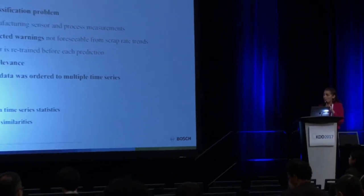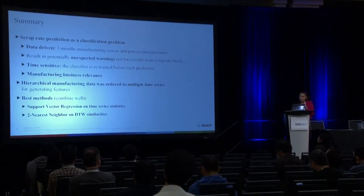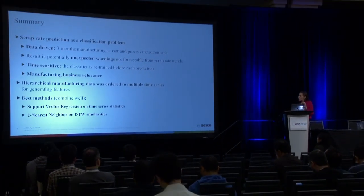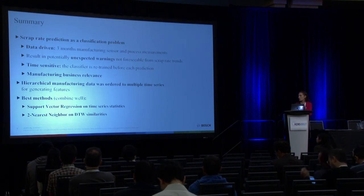In summary, we defined the scrap rate prediction system as a classification task. The method is data-driven, using three months of sensor and process measurements for testing. One of the main contributions was ordering hierarchical manufacturing data into multiple time series for feature generation. We used support vector regression and nearest neighbor methods on the generated datasets.